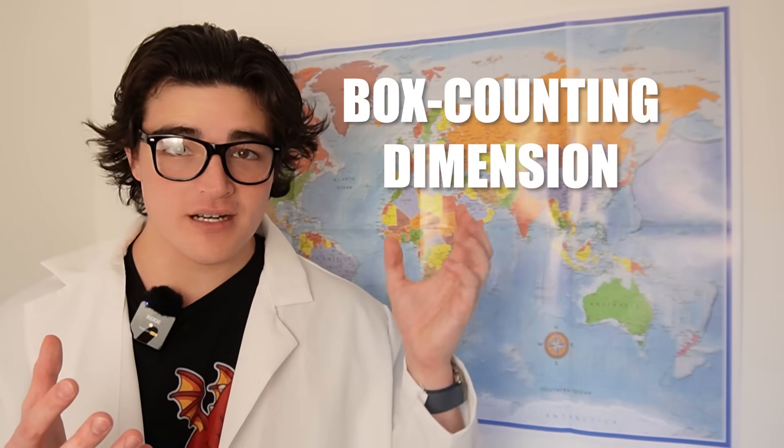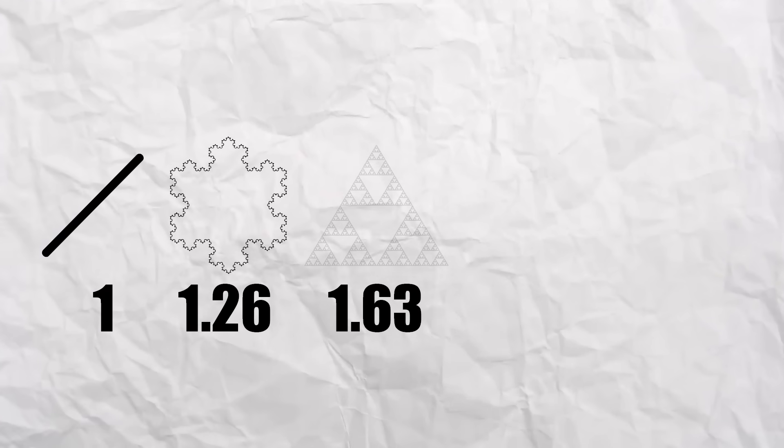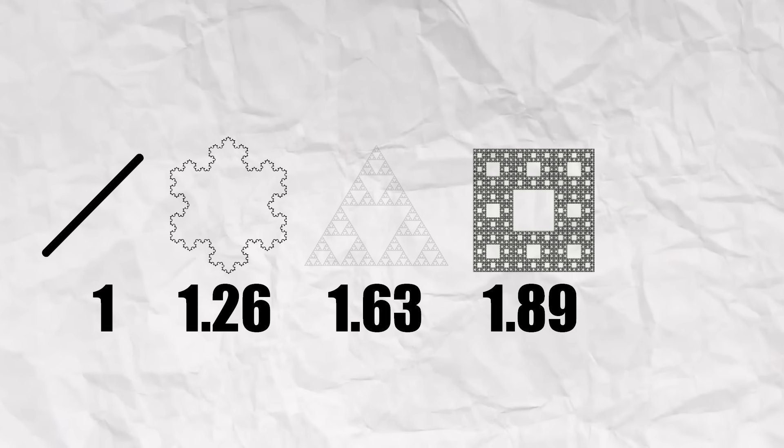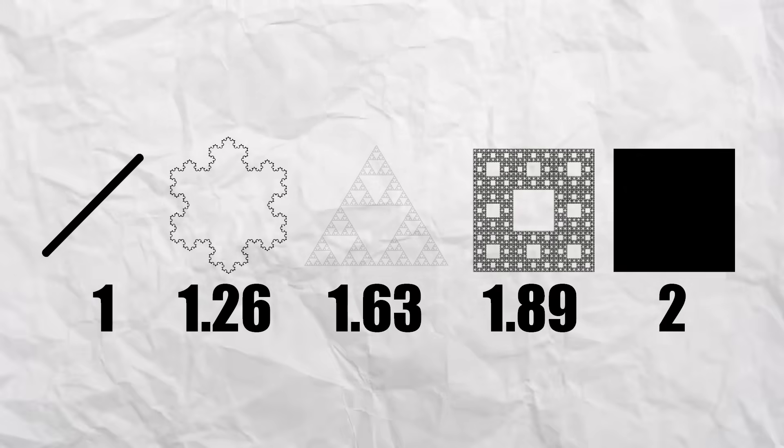Now, I would like to say that there are other types of fractal dimensions, like the box counting dimension and the correlation dimension, but the Hausdorff dimension is the most widely accepted and used, plus it's very intuitive. A line has dimension 1, a Koch snowflake has dimension 1.26, Sierpinski's triangle has 1.63, Sierpinski's carpet has 1.89, and a square has dimension 2. All of which look more filled in than the last.